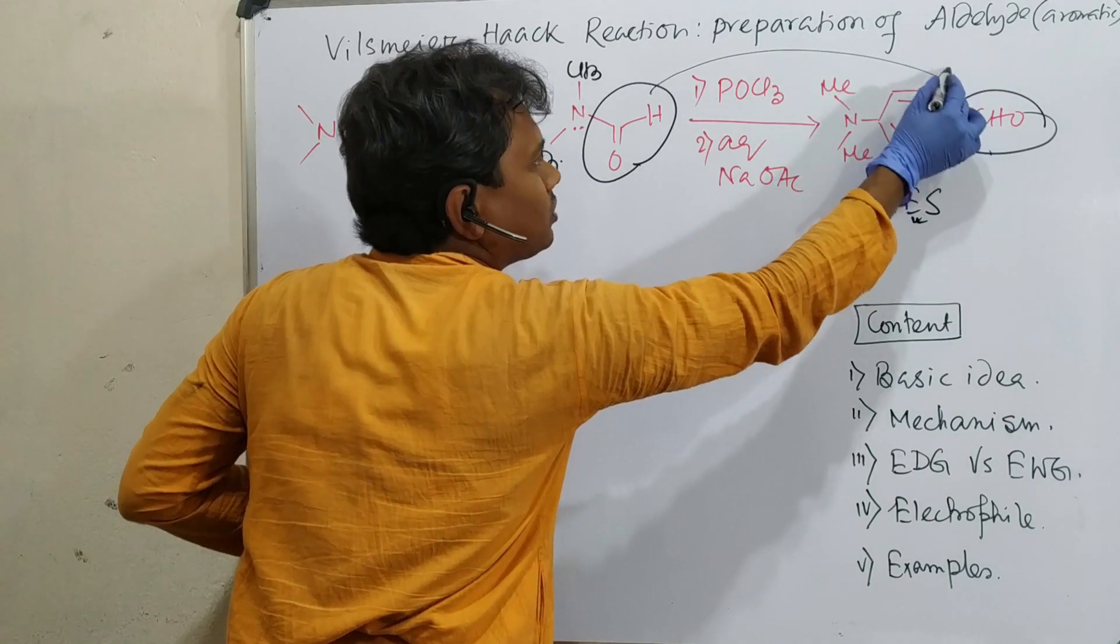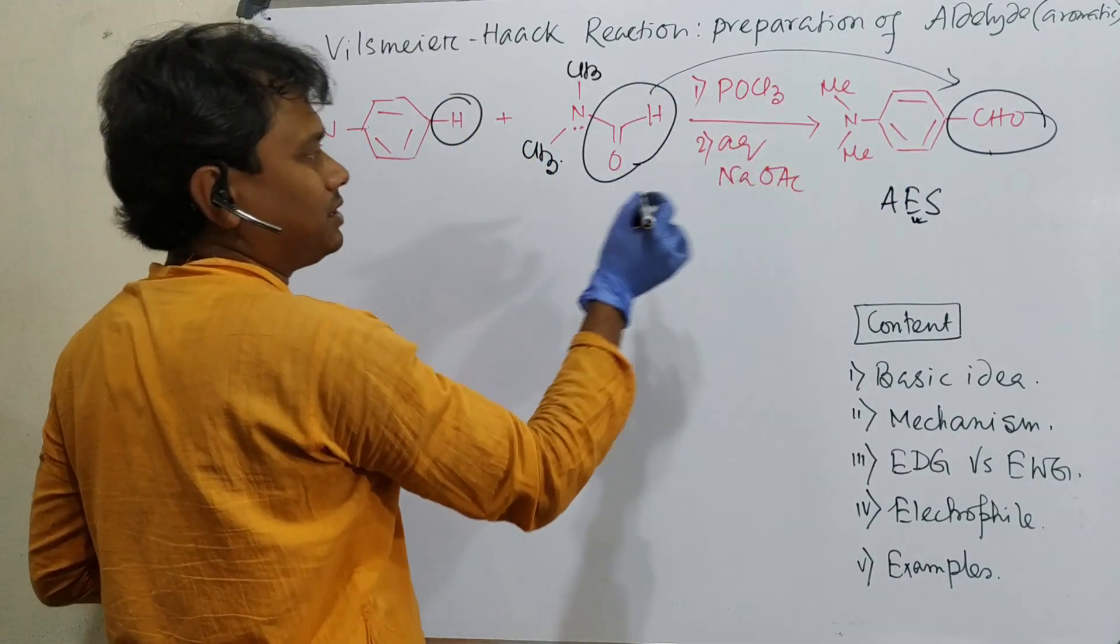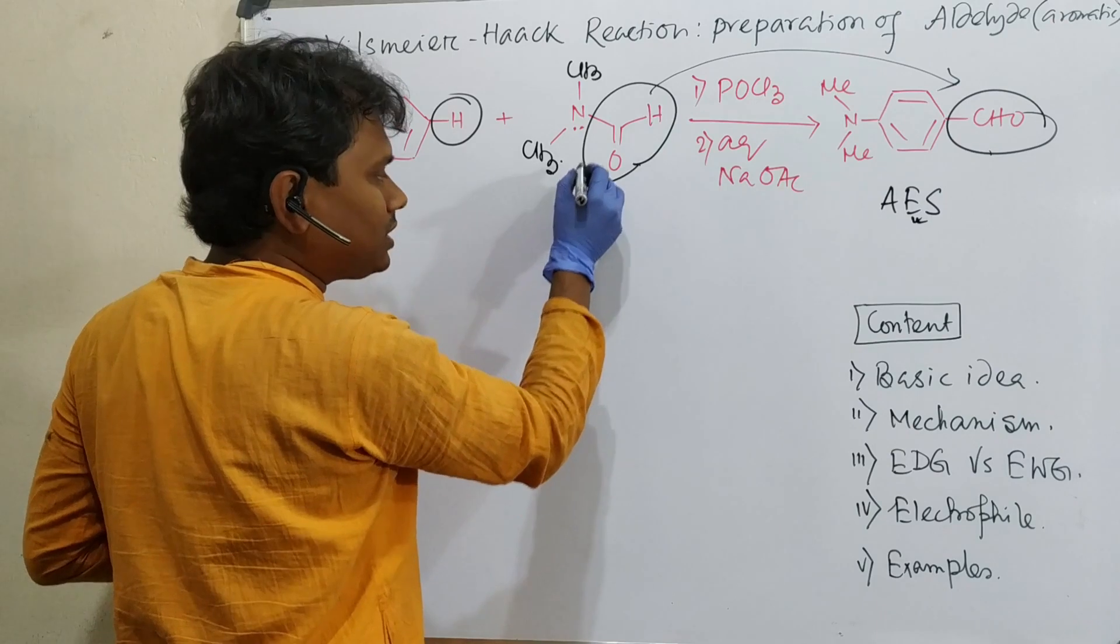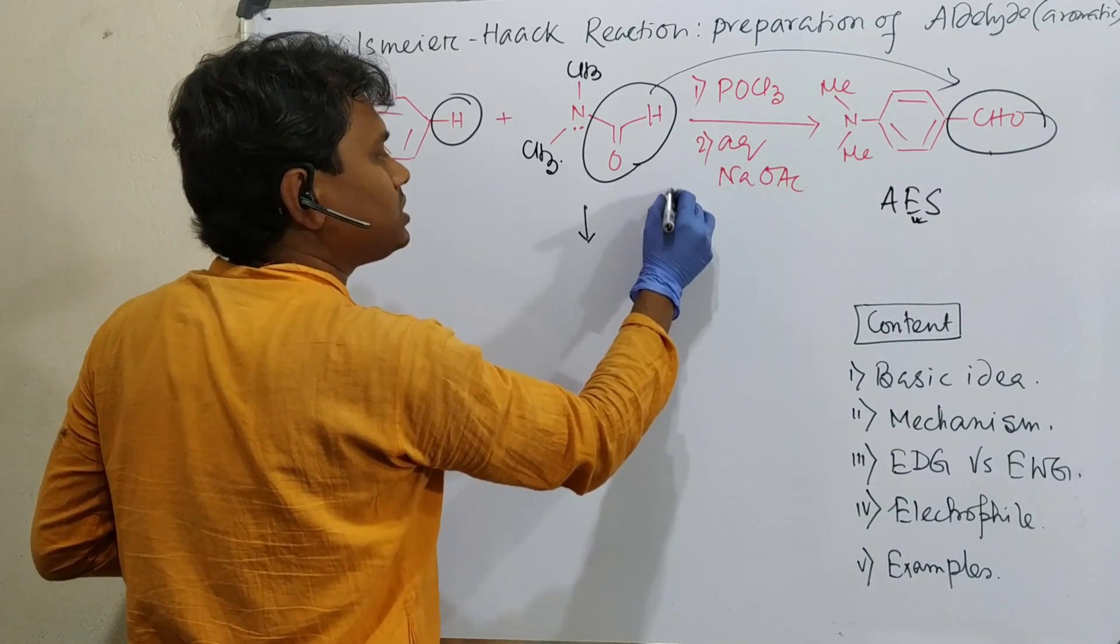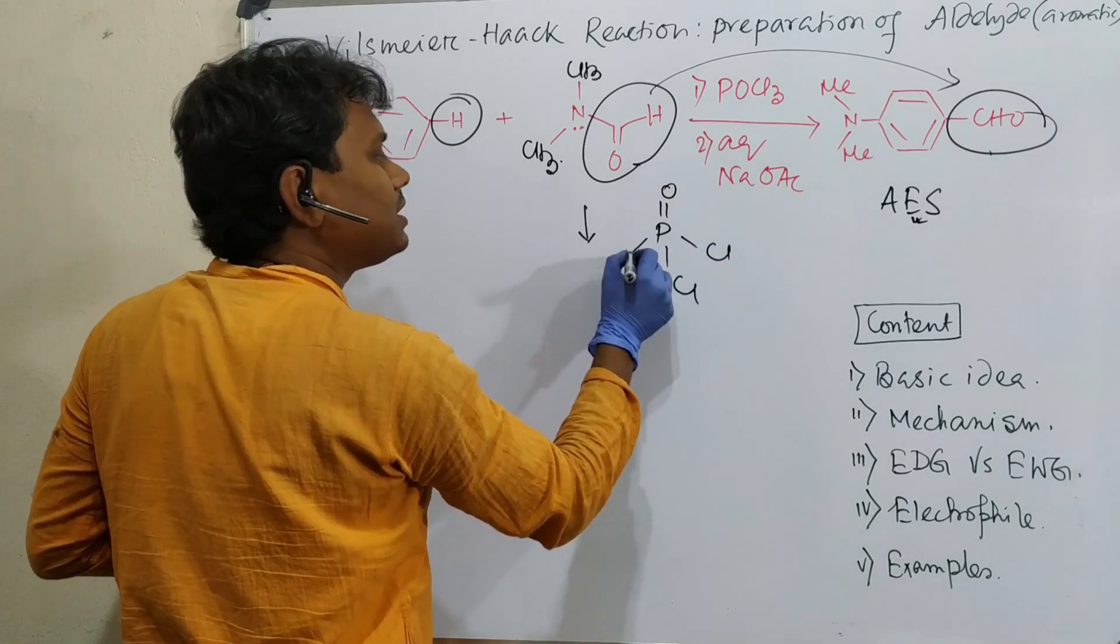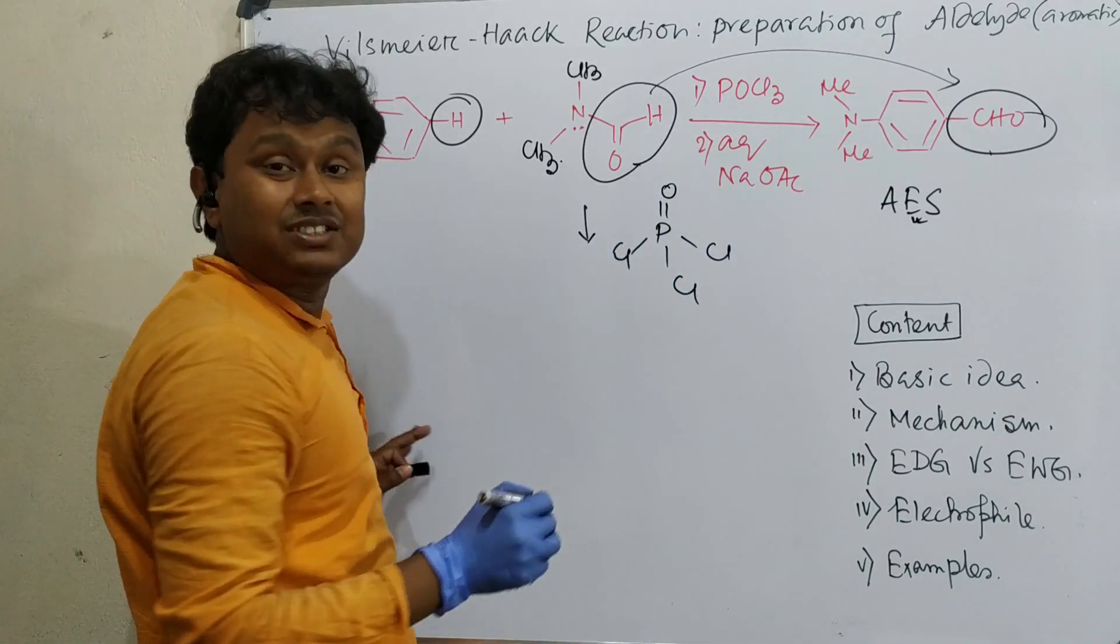You need disubstituted formamide, no N-H bond needed. This CHO part is transferred here. So how is this electrophile generated? It reacts with POCl3, which is phosphorus oxychloride, like phosphoric acid chloride.